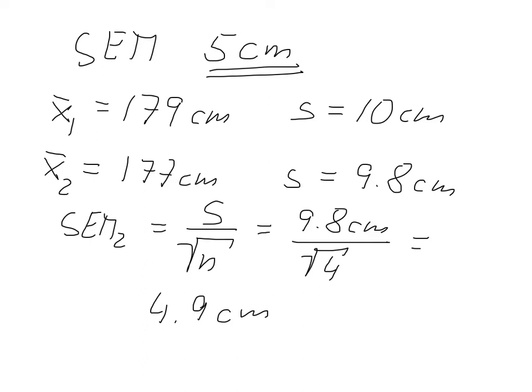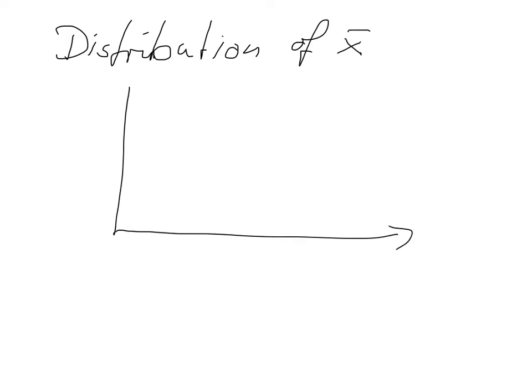And what we probably would get is a distribution of our sample means. So distribution of our sample means of the different X-bars. If we did this experiment loads of times, we would probably see that this is more or less normally distributed. So our sample means show a normal distribution.